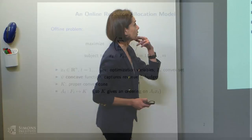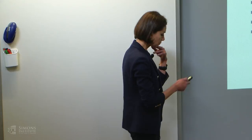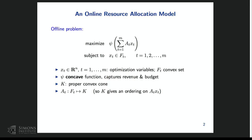We're going to look at a problem that comes up in a very general setting of online resource allocation. First, forget about the word 'online.' Consider this offline optimization problem: maximize a function of summation of coefficients times variables, so a linear mapping of variables x_t, subject to constraints on decision variables x_t. The optimization variables are x_t's, each n-dimensional. The time horizon, or number of variables, is m.